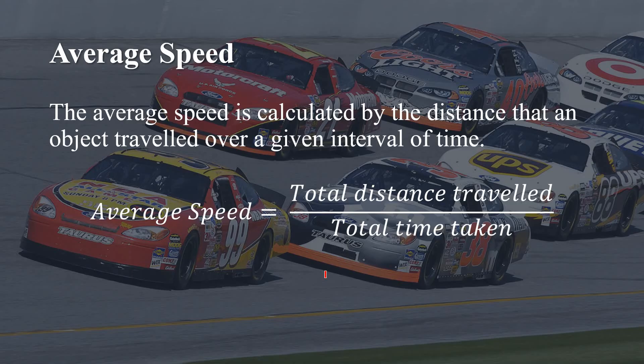Students, now let us understand the term average speed. The average speed is calculated by the distance that an object traveled over a given interval of time. In other words, we can calculate the average speed by applying the formula: average speed equals total distance traveled upon total time taken.